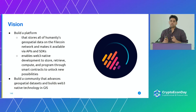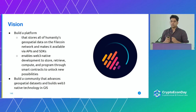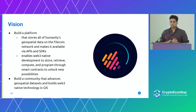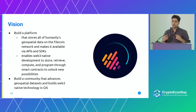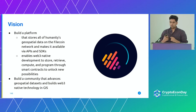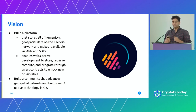The big vision for Atlas.storage is to store humanity's geospatial data and make it available through APIs and SDKs to anyone. That means storing, fast retrieval, computation, and integration with smart contracts to do stuff on-chain. This is an end-to-end web3-native development platform, as opposed to today's centralized web2-native applications. The other part is to build a community that advances geospatial datasets and builds web3-native technology in GIS.